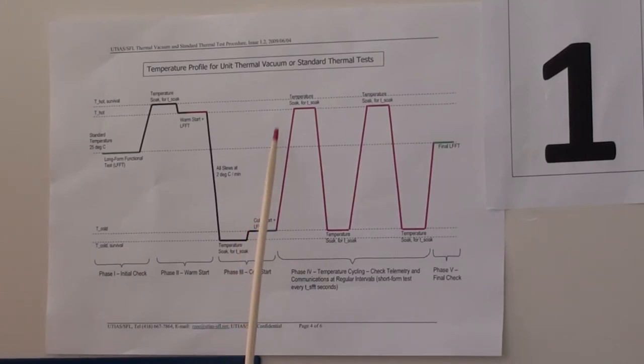Then there are several cycles between maximum and minimum operating temperature. The device will be operating the whole time and tests will be conducted during these changes. At the end we return to 25 degrees where we perform complete tests again to check whether any changes occurred in the electrical parameters of the communication modules during the test.